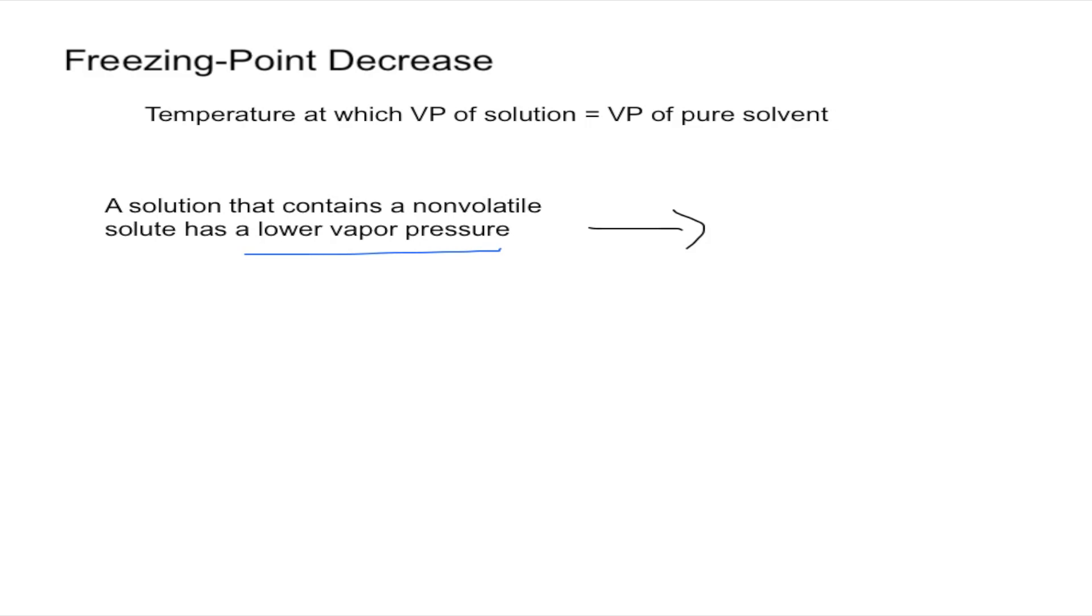So this is going to be a decrease in the freezing point. And the way we calculate that is with the formula. It's very similar to the one of boiling point increase. So we have a delta T of F for freezing and the other one it was boiling. But now we have a negative here.